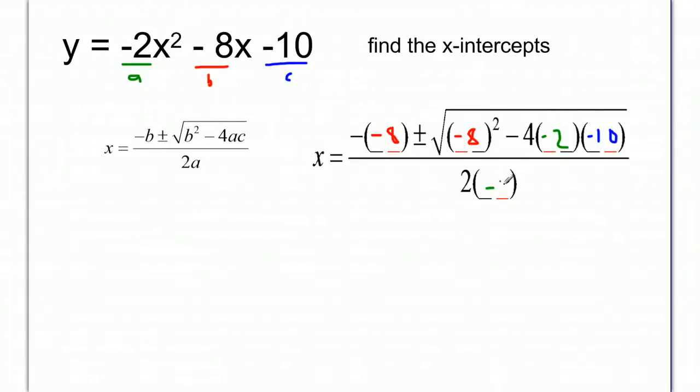And it's all over 2a, so 2 times negative 2. Let's clean this up. Negative negative 8 is positive 8, plus or minus the square root of 8 squared is 64, minus 4 times negative 2 times negative 10. Since these are all negative, you multiply them together and you'll get negative 80, so 64 minus 80.